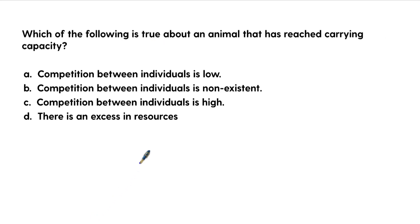Here's question two. Which of the following is true about an animal that has reached carrying capacity? So A says competition between the individuals is low. B, competition between individuals is non-existent. C, competition between individuals is high. Or D, there is an excess in resources at carrying capacity.